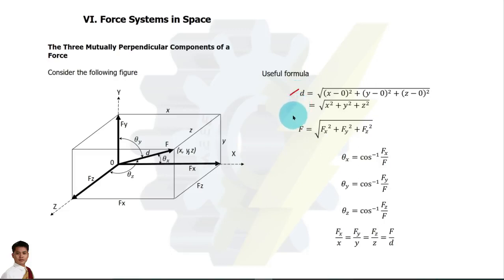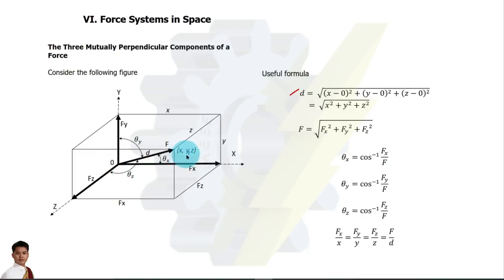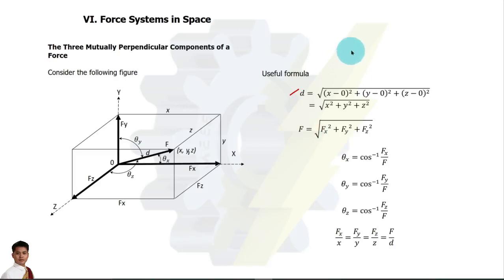We also have the diagonal of the rectangular parallelepiped which can be formed based on the coordinates of the given force. Here we have force F passing through the origin and at a point with coordinates x, y, z. The relation between the force and its components is simply F equals the square root of the sum of the squares of the components.